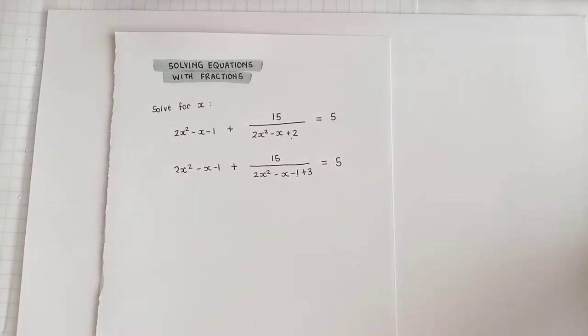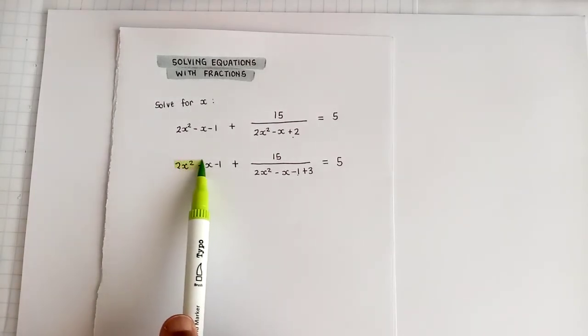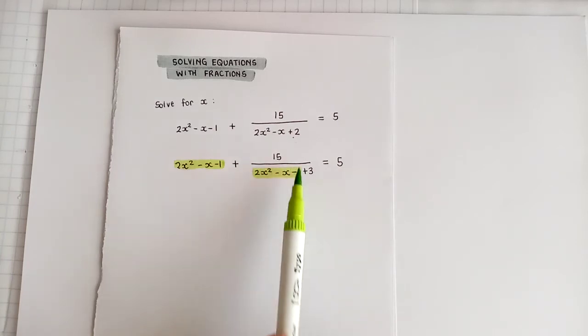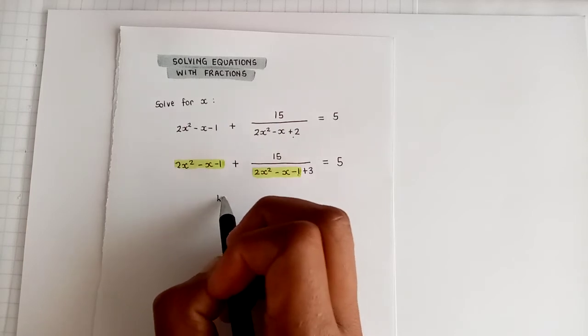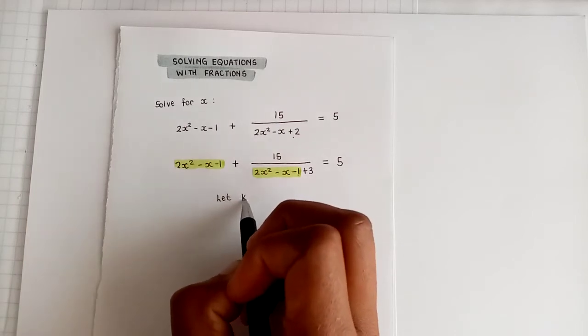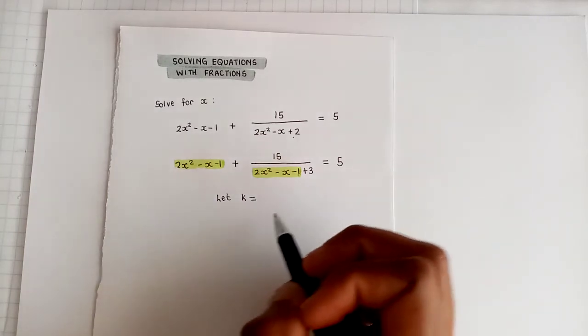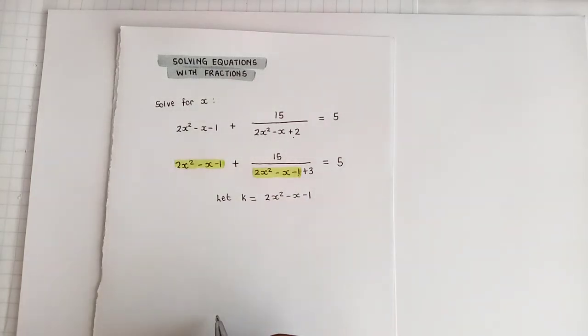So now can you see we can make an entire substitution for the quadratic 2x² - x - 1, because it shows up over there and it also shows up over here. Wonderful. All right, so thus then begins the k method. You will then say let, and this has to be written down. Whenever you make some sort of a substitution, you have to write down what you're doing. So let k equal 2x² - x - 1.